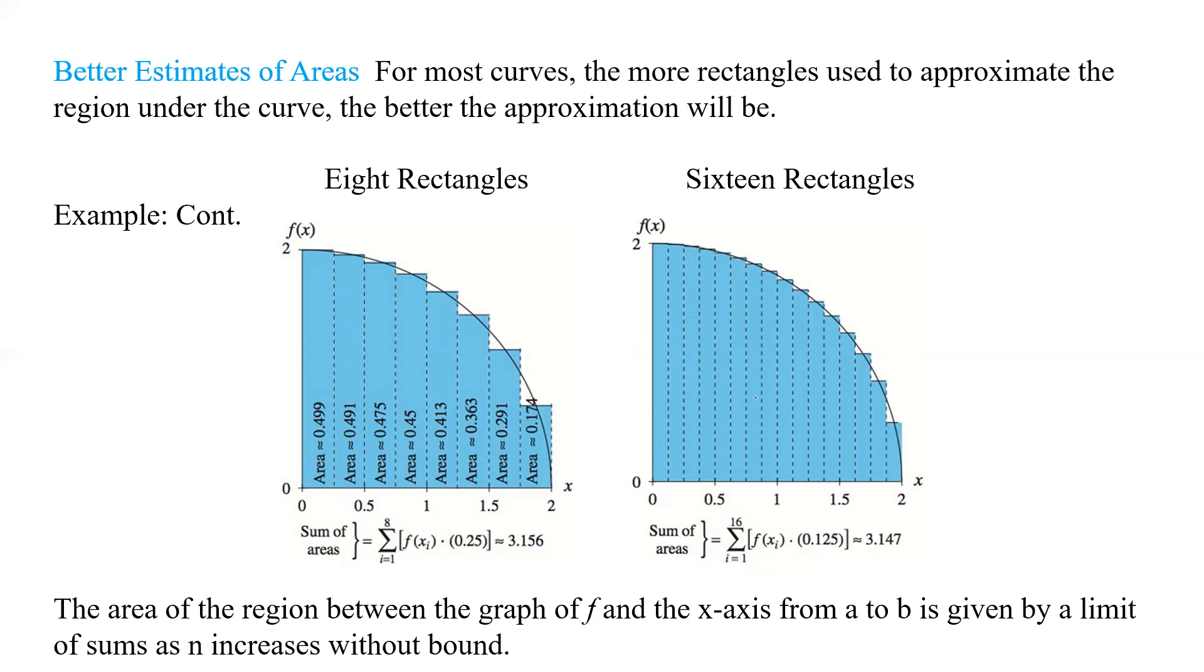They're making them smaller every time we get a smaller cut. So, the more rectangles we have, the smaller the cut, and the less amount of error we have left or right, depending on where we're at on the curve.